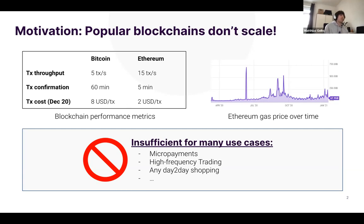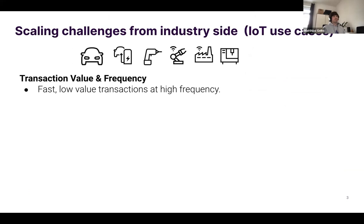Daniel from Bosch will tell you about the challenges from the industry side. My name is Daniel Kunz and I'm working for Bosch Center Research in Germany. I'd like to give you an overview of the challenges we see in adopting blockchain technology in the IoT space. The first point is regarding transaction value and frequency — we expect a high number of microtransactions for small asset transfers for received services or data.